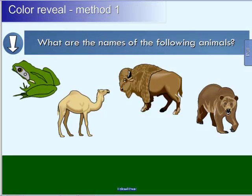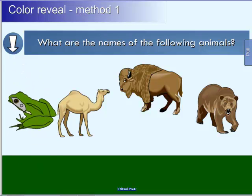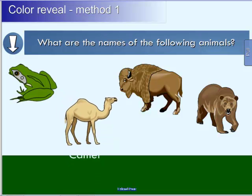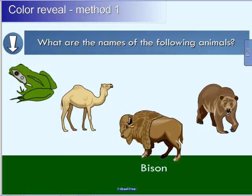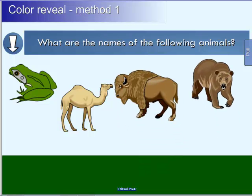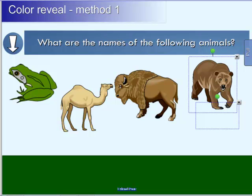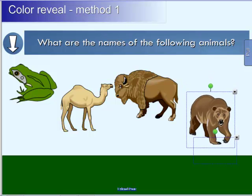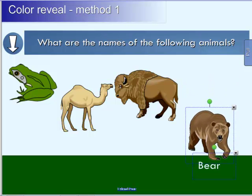Another method of layering is doing what's called a color reveal. This is an example from the Lesson Activity Toolkit. As I move one of these animals down to the bottom, you'll notice that it displays the name of the animal. A very simple technique. All you need to do is to group the picture with a text box, as you can see here with the bear example. The text inside the text box is the same color as the background. You can't see it until you move the text box over the darker background color. That's called a color reveal.